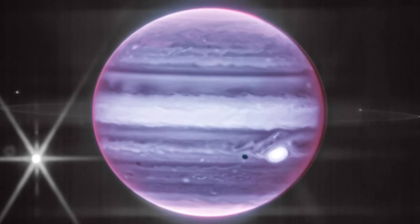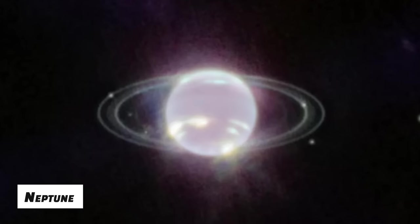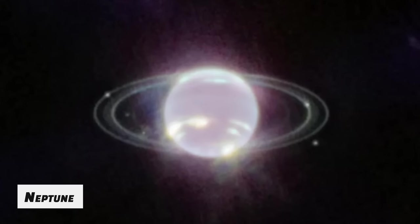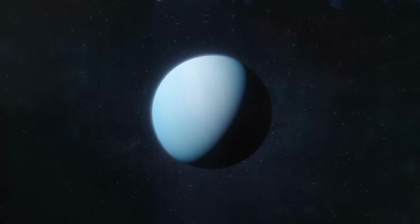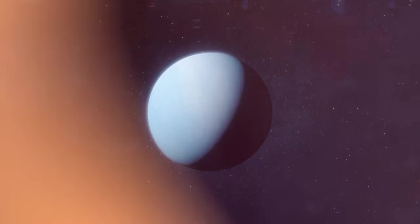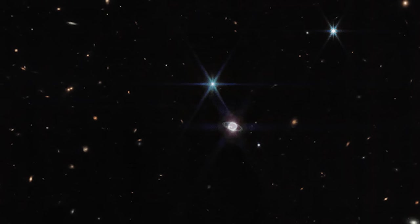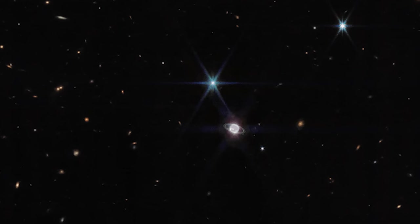The NIRCam image of Neptune, captured by the Webb Space Telescope, brings the planet's rings into sharp focus for the first time in almost three decades. Despite being vastly larger than Earth, Neptune appears comparatively little in the vastness of the universe.